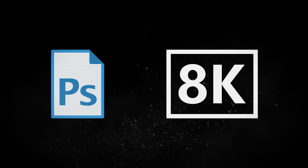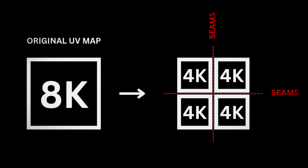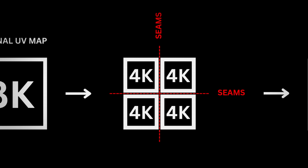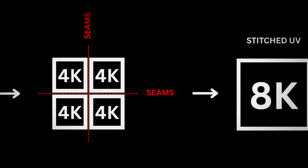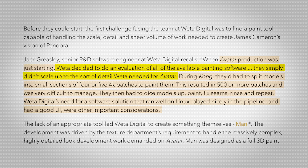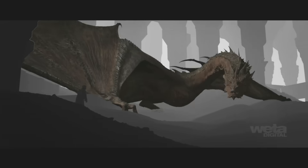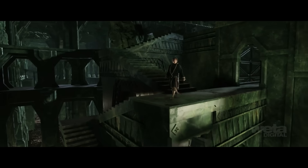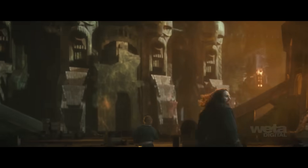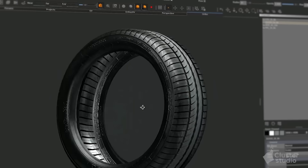The software struggled with both size and the number of maps required. Weta's team often had to split the model's surface into hundreds of smaller 4K texture patches just to paint it in pieces, then manually fix seams between them. This workflow was error-prone and inefficient. Existing painting software simply didn't scale up to the detail level Weta needed — before Mari, painting software could only handle a handful of maps at once, whereas Weta's projects demanded working with dozens or even hundreds of 8K maps simultaneously, a task essentially impossible in Photoshop at the time. These challenges compelled Weta to engineer a new texturing software from scratch.